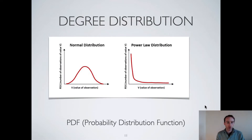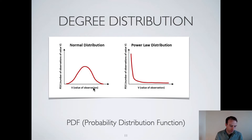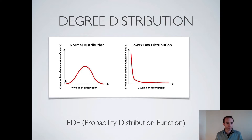Now we come to the degree distribution, which is very interesting to examine in a network. A quick reminder about what a distribution is: on the x-axis you have the value of the observation, and on the y-axis you have the number of observations or the probability to observe that value.